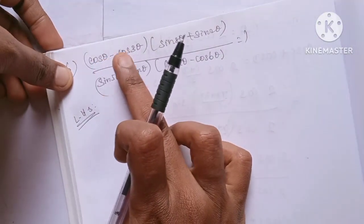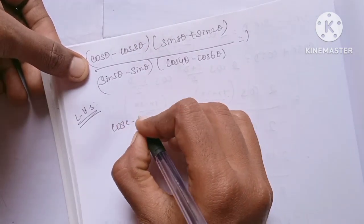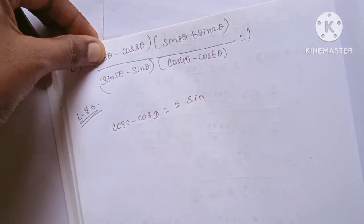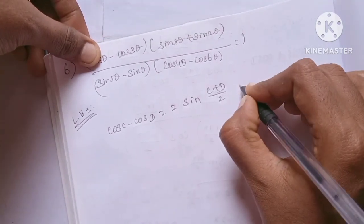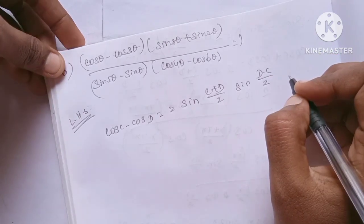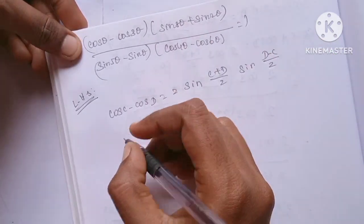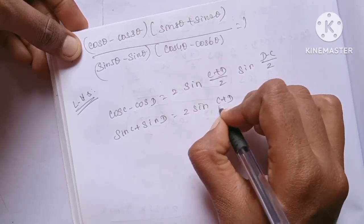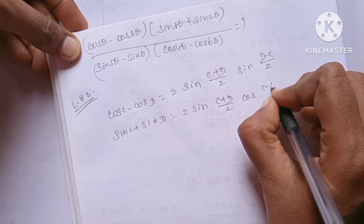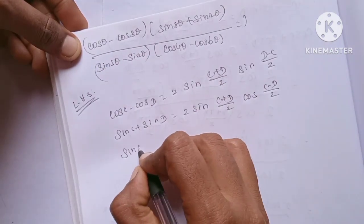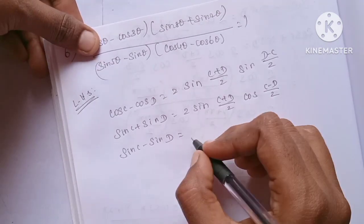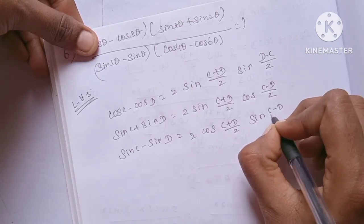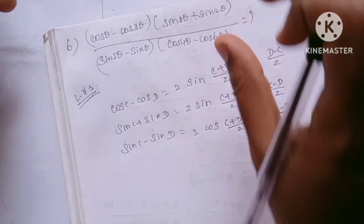The formulas are: sin C plus sin D equals 2 sin((C+D)/2) cos((C-D)/2); sin C minus sin D equals 2 cos((C+D)/2) sin((C-D)/2); and cos C minus cos D equals negative 2 sin((C+D)/2) sin((D-C)/2).